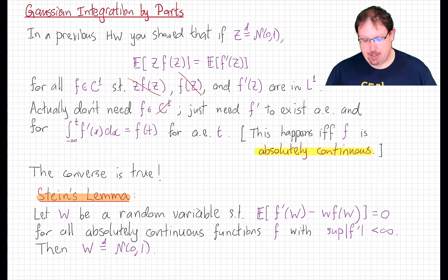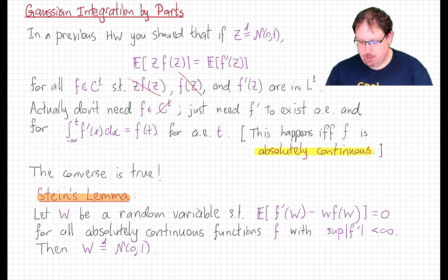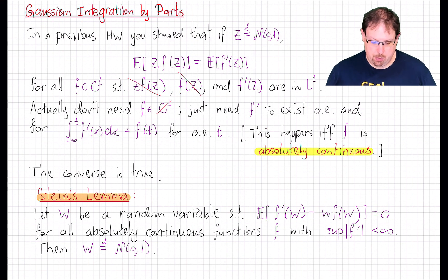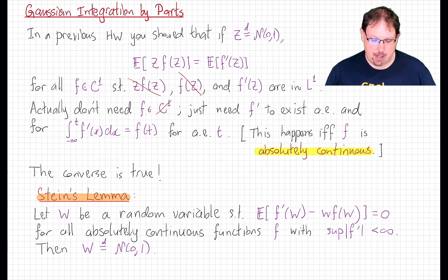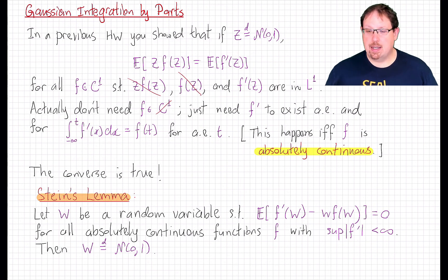What's really remarkable here is that this property actually characterizes the Gaussian, and that is Stein's lemma. If w is any random variable for which this equation holds for all absolutely continuous functions f whose almost everywhere defined derivative is bounded, then that random variable w actually is a standard normal in distribution. This lemma is named after Stanford statistician Charles Stein, who died at the age of 96 in 2016. We're going to present Charles Stein's clever proof of this lemma together with insights that will show us a new way to prove normal approximation in central limit theorems, even where independence isn't there to help us.